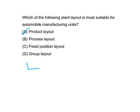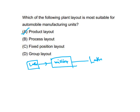For example, in product layout: first the lathe machine, then the milling machine, then drilling — arranged in sequence like this.